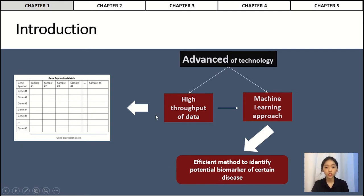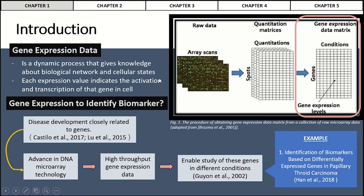Gene expression data is one of the biological data types produced due to advances in DNA microarray technology. Gene expression is a dynamic process that gives knowledge about biological networks and cellular states. Each expression value indicates the activation and transcription of that gene in a cell. In bioinformatics, one application of gene expression data is the identification of potential biomarkers or significant genes for certain diseases and classification of cancer and normal control samples. High throughput gene expression data has enabled the study of genes in different conditions, especially in cancer disease, as disease development is closely related to the behavior of genes.